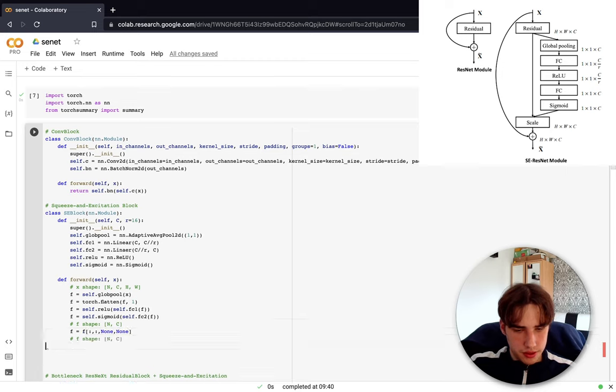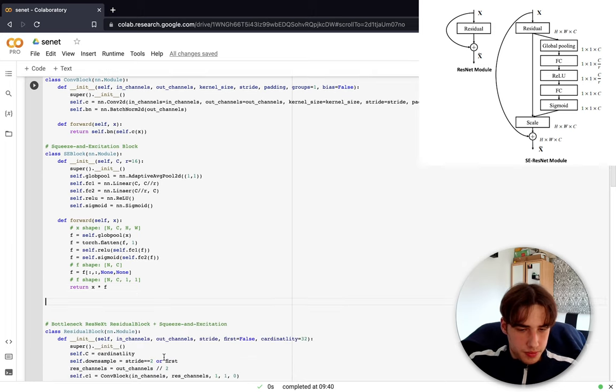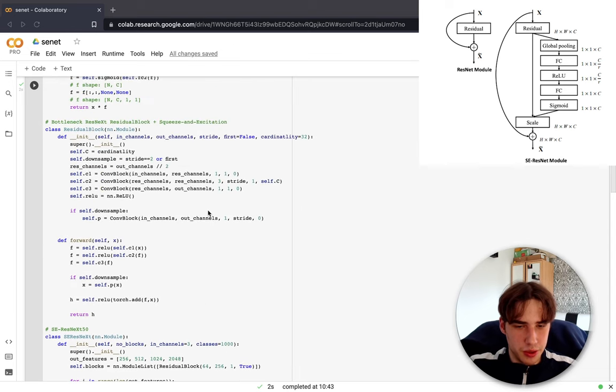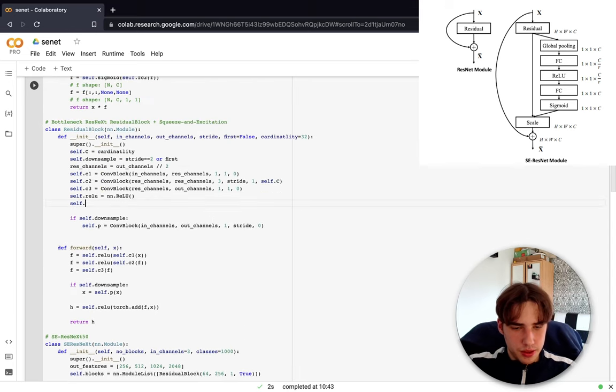Now what we need to just do is basically multiply, and that's basically it. So now we just need to add it on top of the residual block.